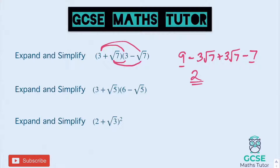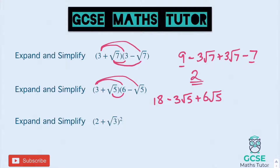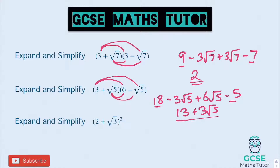On to the second one. 3 times 6 is 18. 3 times negative root 5 is negative 3 root 5. Root 5 times 6 is positive 6 root 5. And the last one: root 5 times negative root 5 is negative 5. Tidying it up: 18 take 5 is 13. Negative 3 lots of root 5 add 6 lots of root 5 gives us positive 3 lots of root 5. So the final answer is 13 + 3√5.